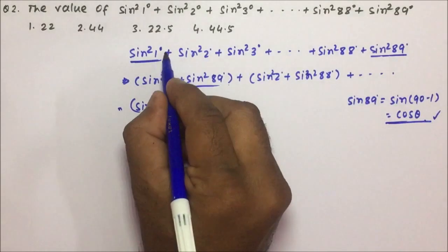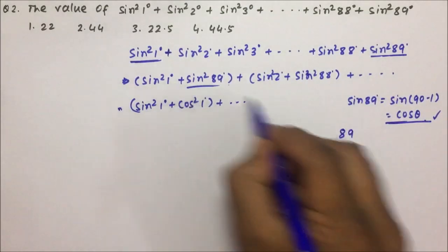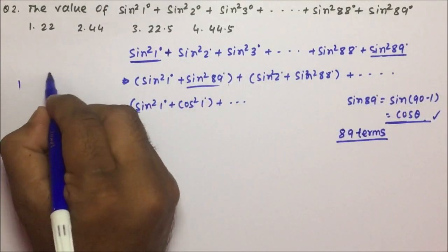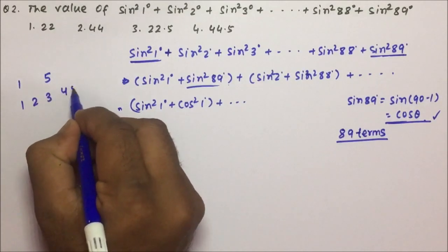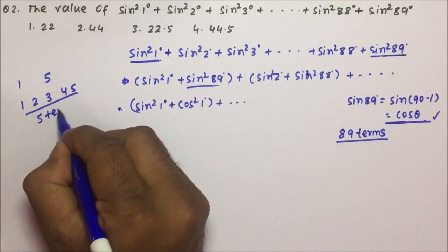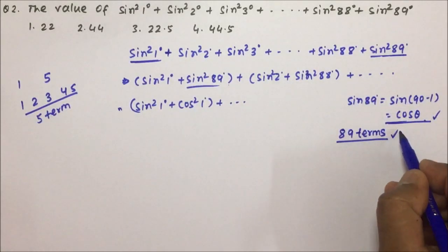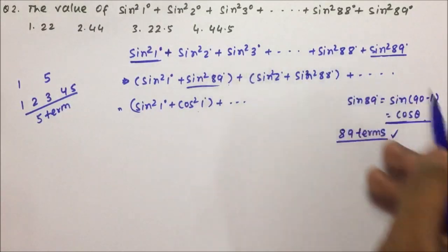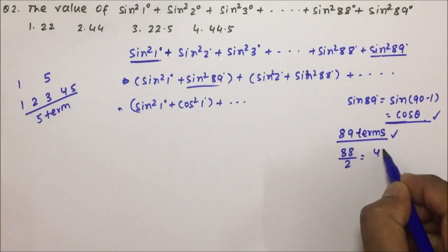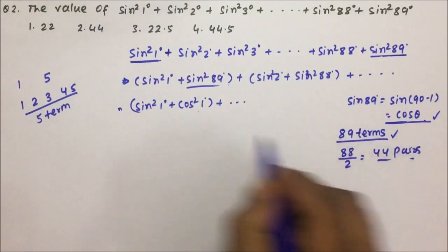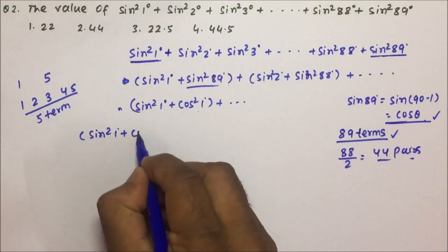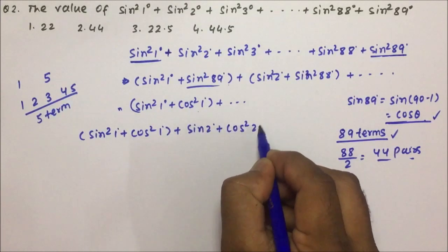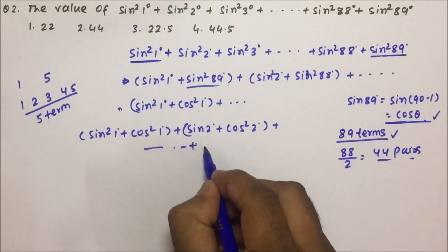The question has everything given in plus. Total 89 terms are there, from 1 to 89. Now, 1 pairs with 89, 2 pairs with 88, 3 pairs with 87 — so 88 divided by 2, that means 44 pairs will be there. Like sin²1° + cos²1°, sin²2° + cos²2°, and so on — we will have 44 pairs.